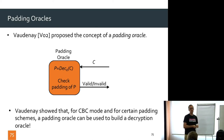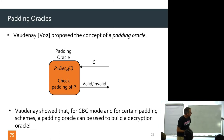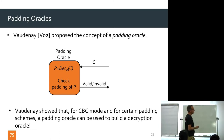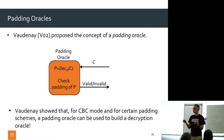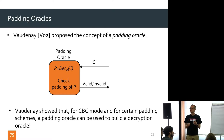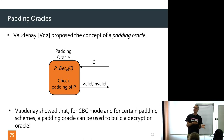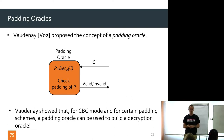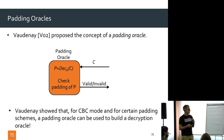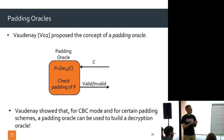What Vaudenay showed — which was a surprise at the time — was that for CBC mode with certain padding schemes including TLS, you can use a padding oracle to build a decryption oracle. By repeatedly using the padding oracle cleverly, you can actually decrypt and get as much plaintext as you like back, quite efficiently. This is like a symmetric-setting analog of the Bleichenbacher attack from 1998.